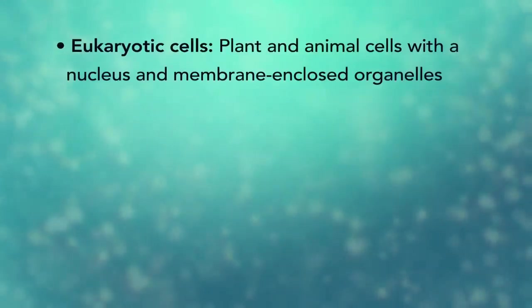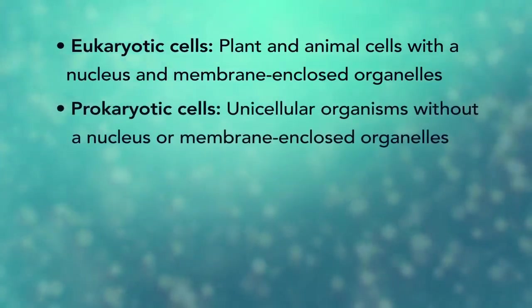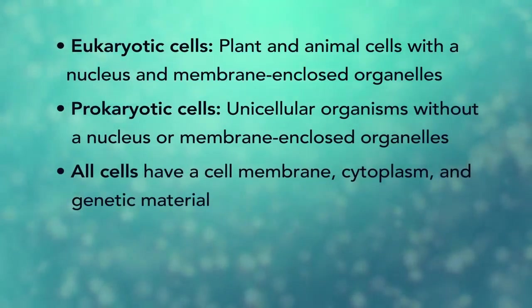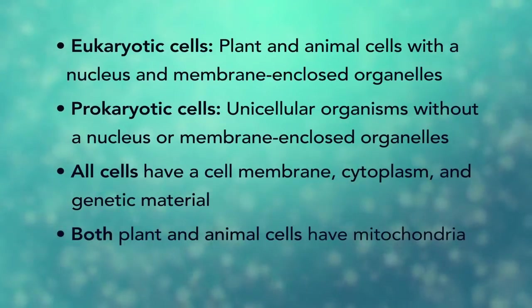In summary, remember, eukaryotic cells are plant and animal cells with a nucleus and membrane-enclosed organelles, while prokaryotic cells are unicellular organisms without these things. All cells have a cell membrane, cytoplasm, and genetic material. And even though only plant cells have chloroplasts, both plant and animal cells have mitochondria.